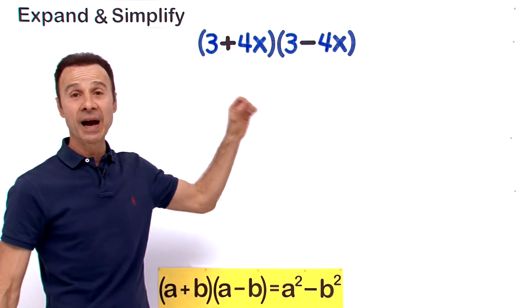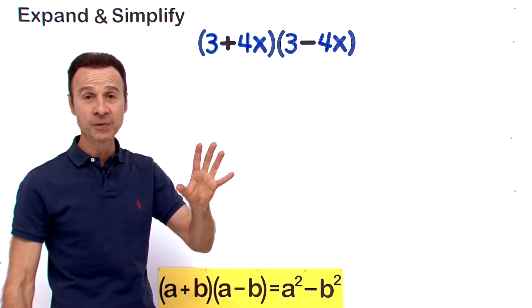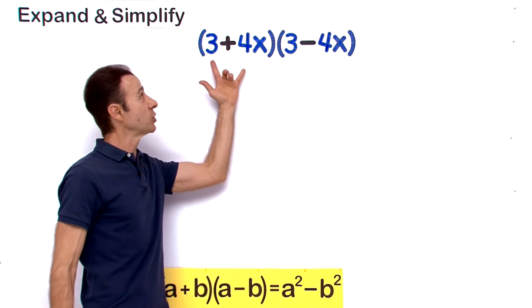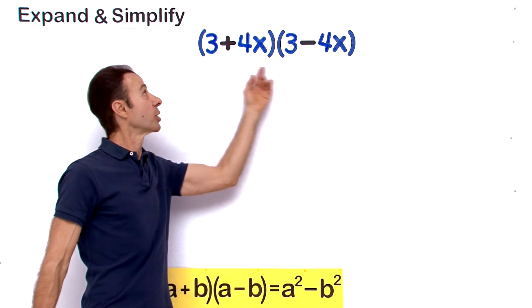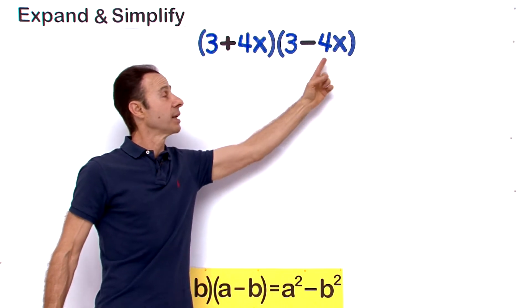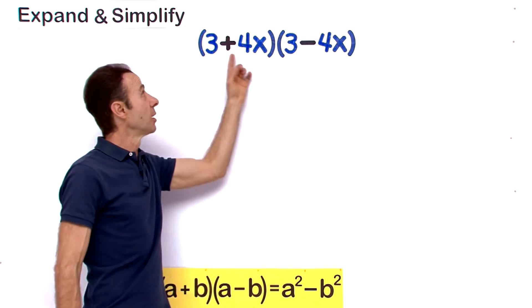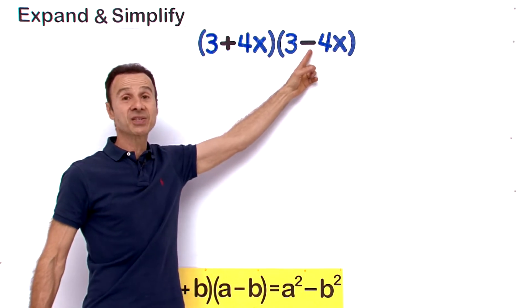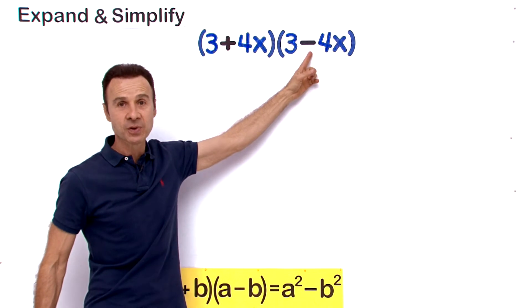Okay, let's expand and simplify a difference of two squares. We know it's a difference of two squares because we have the same terms in both binomials: we got a 3 and a 4x, a 3 and a 4x. The only difference is we got a plus and a minus, and that's the difference that makes it a difference of two squares.